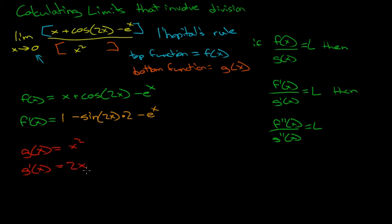If we plug this in, we can see what happens. We'll have the limit as x approaches 0 of 1 minus sine(2x) times 2 minus e to the x over 2x. But we get the same problem, because if we put in 0, then this is going to be dividing by 0 again. But since f prime of x over g prime of x equals L, then f prime prime of x over g prime prime of x equals L.